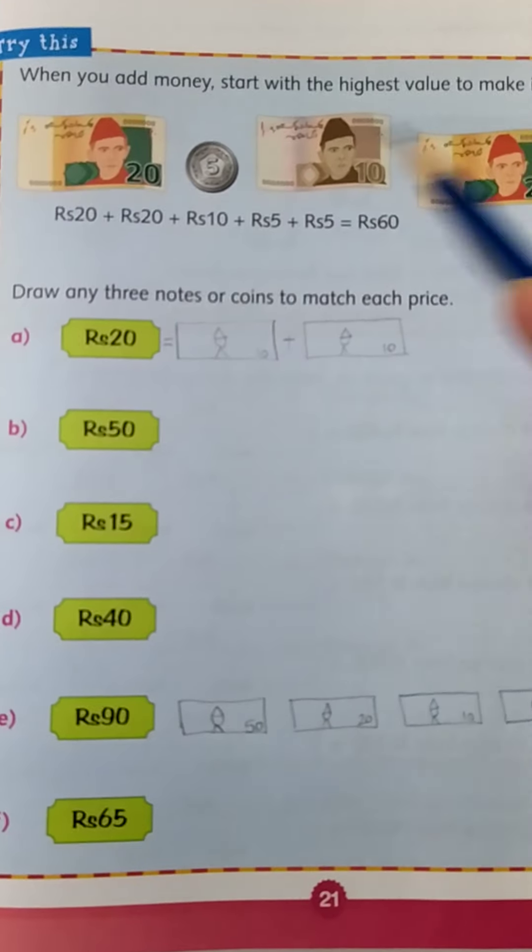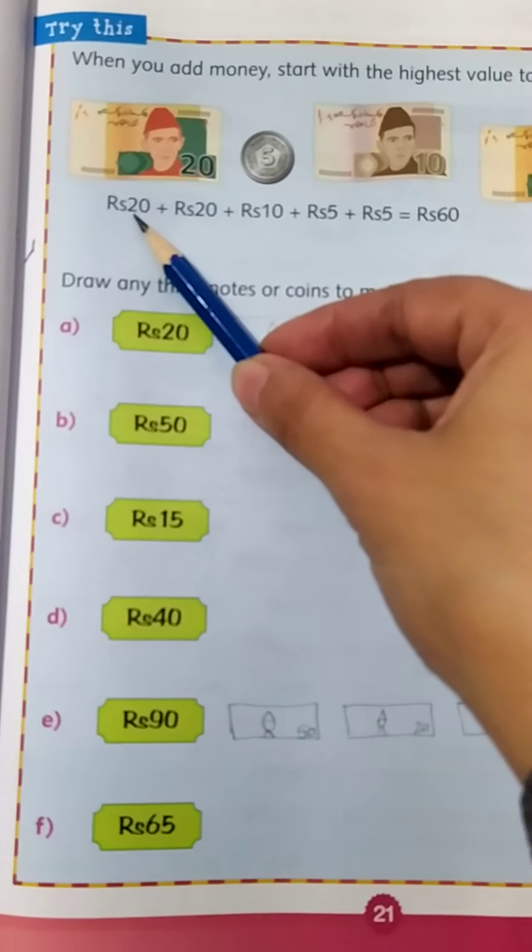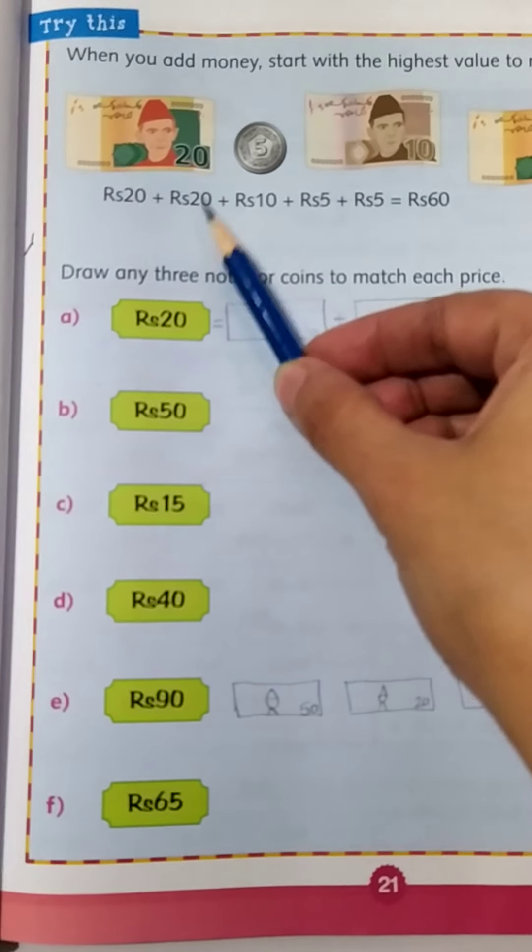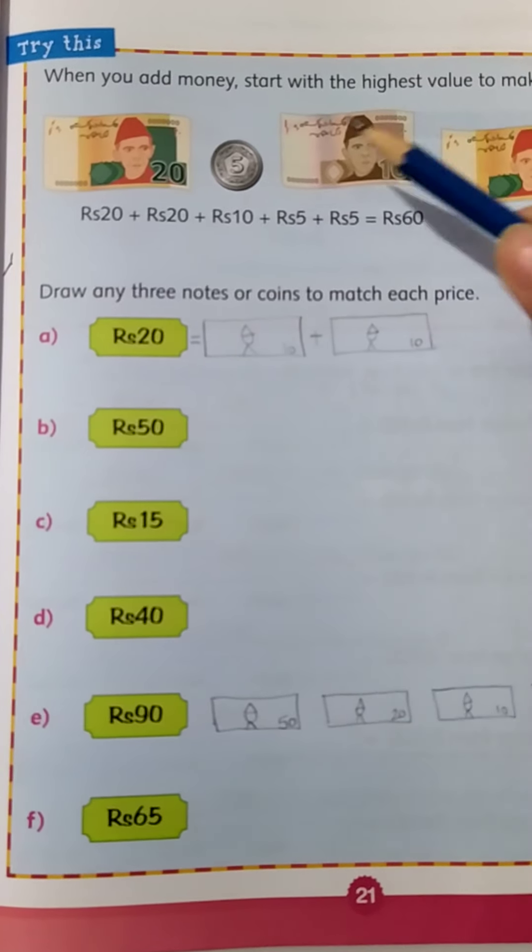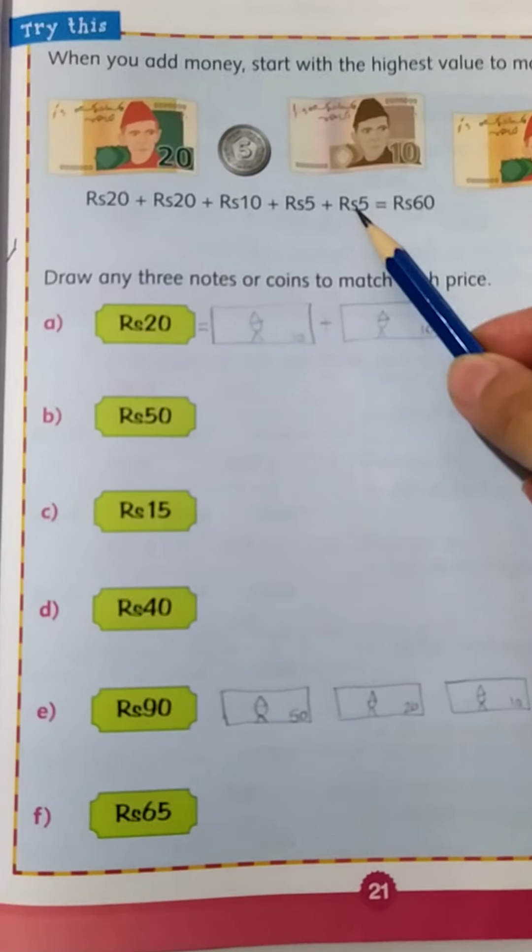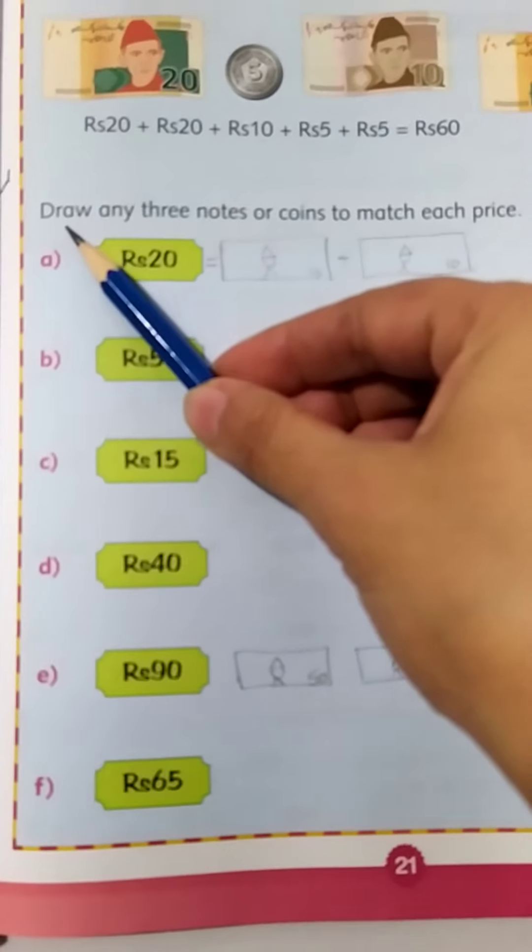So first they have written 20, then again they pick up 20 from there and put it here, 20. Then what is smaller than 20? Yes, 10. 10 is here now. 5 and 5. Now they have made the total. Now look at this.